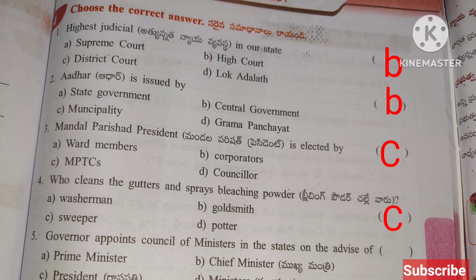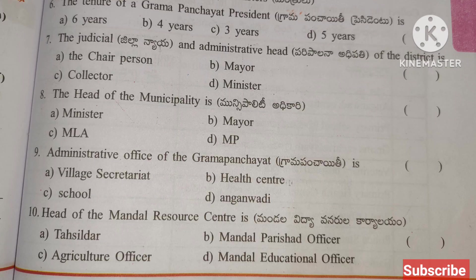Governor appoints the Council of Ministers in the states on the advice of — answer is B: Chief Minister. The tenure of a Gram Panchayat President — answer is D: Five years.